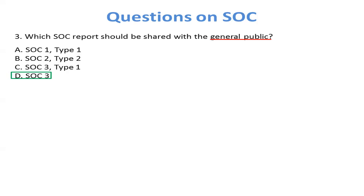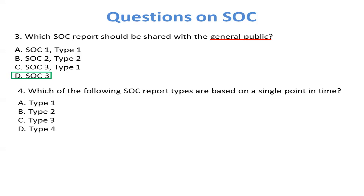Question 4: Which of the following SOC report types are based on a single point in time? The main keyword is 'single point in time.' There are two types — Type 1 and Type 2. Type 1 is about a single point in time, and Type 2 is about a period of time. So the correct answer is A, Type 1.